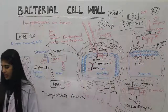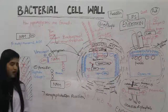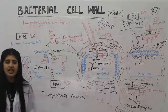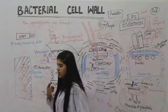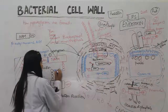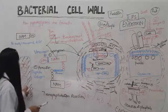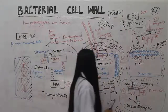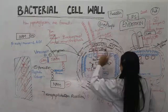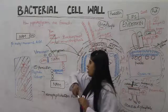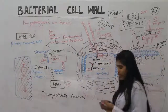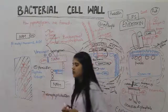Drugs that inhibit cell wall synthesis include cycloserine, bacitracin, vancomycin, penicillin, and cephalosporins. The peptide tetramer is formed by transpeptidases, which are captured (inhibited) by penicillin. Cycloserine prevents the initial steps; bacitracin prevents bactoprenol from carrying NAM and NAG outside; vancomycin prevents bonding between NAM and NAG. Disruption of peptidoglycan leads to bacterial death — bacteria cannot survive without an intact cell wall.